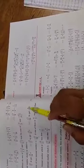The sum of 2 rational numbers is minus 15 upon 28. If one of them is 6 upon 7, find the other.